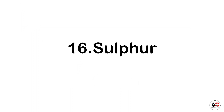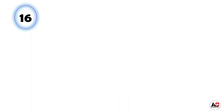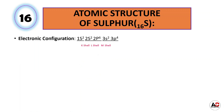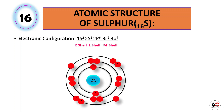Now the next element is sulfur. The atomic number of sulfur is 16, meaning it has a total of 16 electrons. So the electronic configuration of sulfur is 1s2, 2s2, 2p6, 3s2, and 3p4. With the help of this electronic configuration we can easily draw the atomic structure of sulfur. It has 16 protons and 16 neutrons inside the nucleus and 16 electrons around the nucleus: 2 are in the K shell, 8 are in the L shell, and 6 are in the M shell.